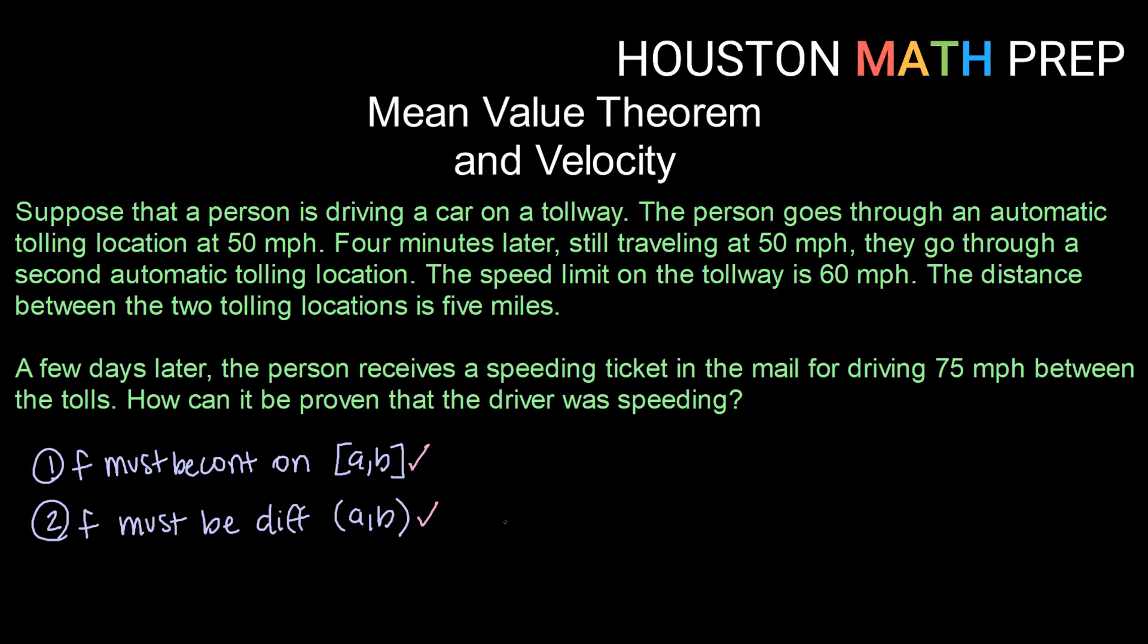Okay, so now that we know the mean value theorem applies, what does the mean value theorem tell us? Well, mean value theorem in general says that there is some value on the interval where the instantaneous velocity or derivative is equal to the average velocity or the slope of the secant line. You can think of your instantaneous velocity as your speed at any given moment. And we can calculate the average velocity based on the information we have from the tolling booths.